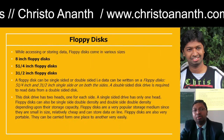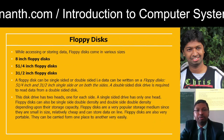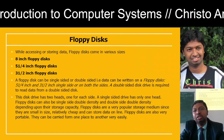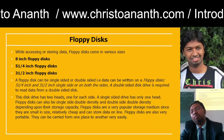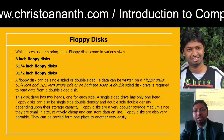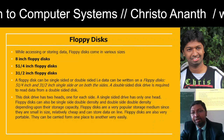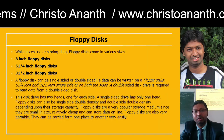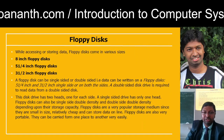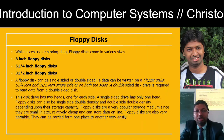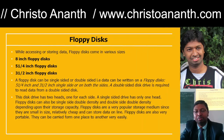Floppy disks come in sizes of 8 inch, 5¼ inch, and 3½ inch. They can be single-sided or double-sided. A double-sided disk requires two read/write heads; a single-sided drive has only one head. Floppy disks are very popular because they are small, cheap, cost-effective, and efficient. They are also portable — you can transfer them from one computer to another and carry them in your pocket.